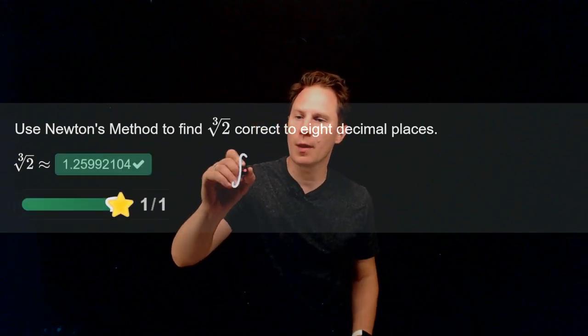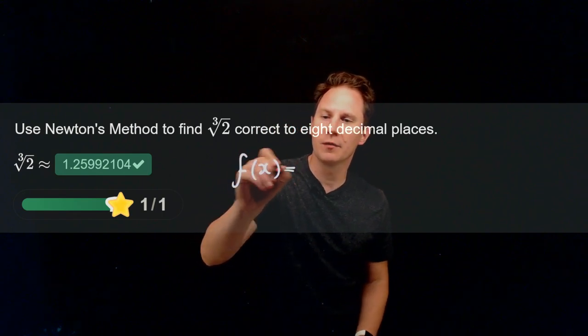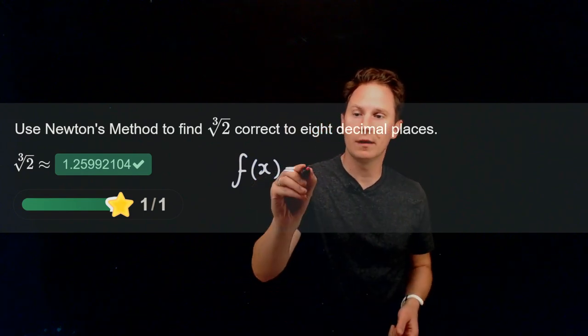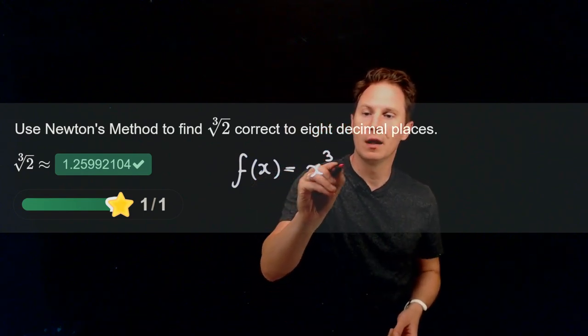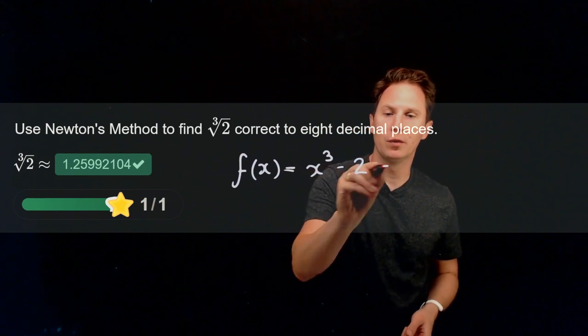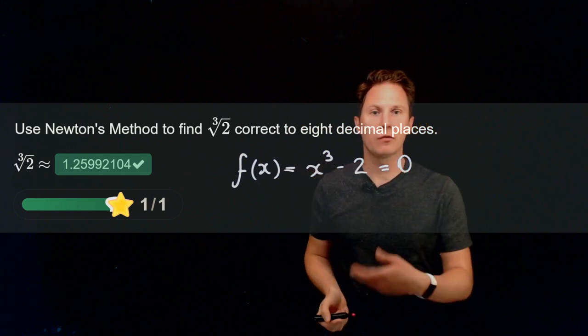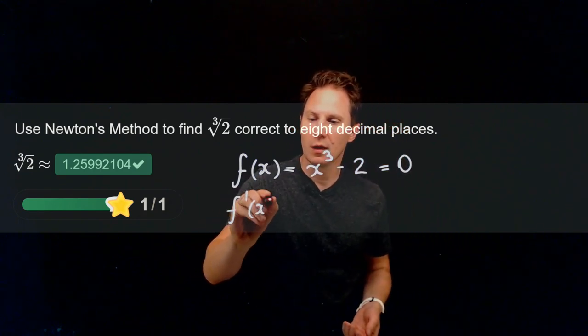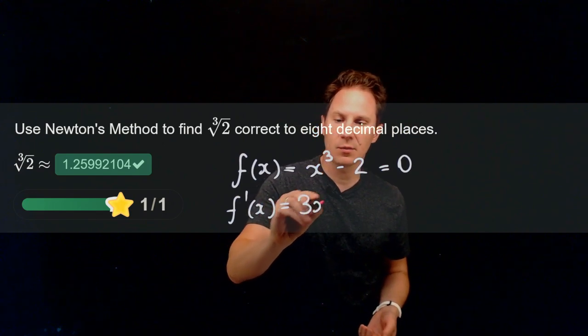One way to use Newton's method would be to come up with a function which vanishes at the cube root of two, and one function that does that would be x³ - 2. It becomes zero exactly when x is equal to the cube root of two. Now, the derivative of this function is 3x².